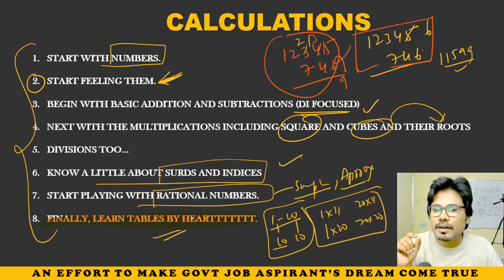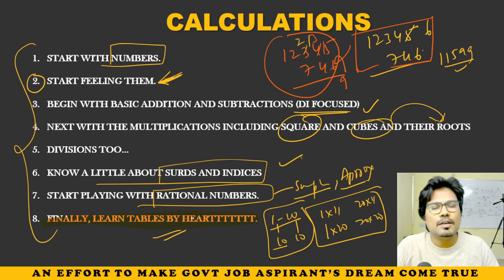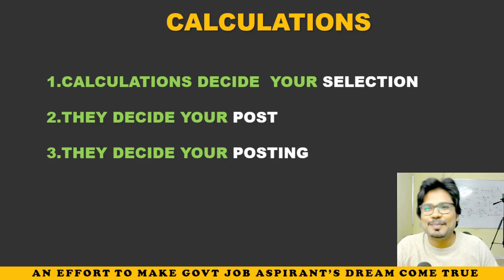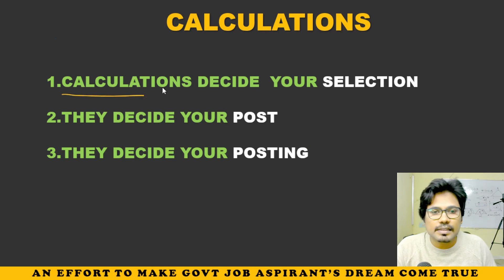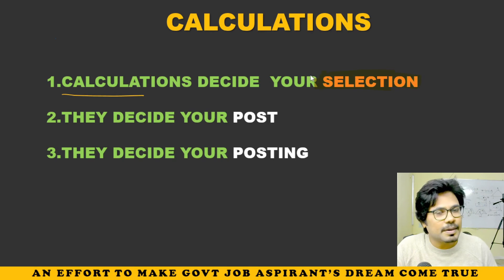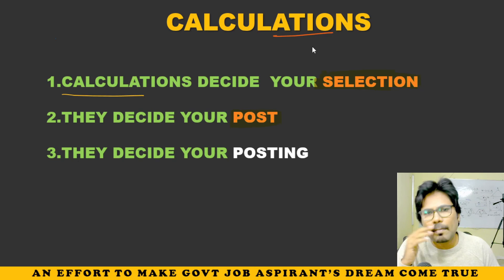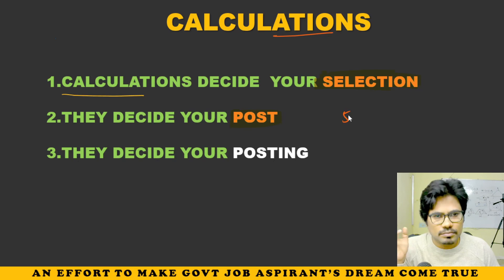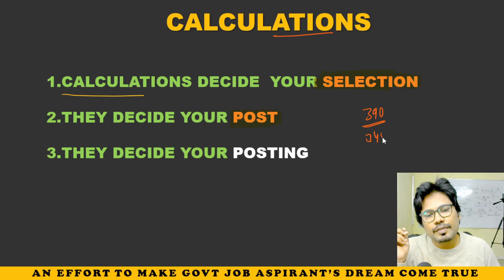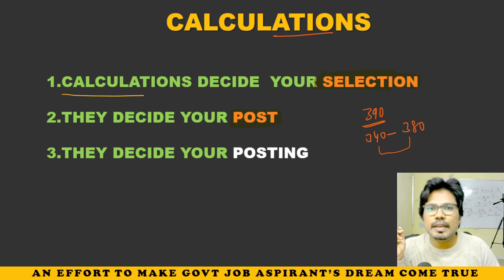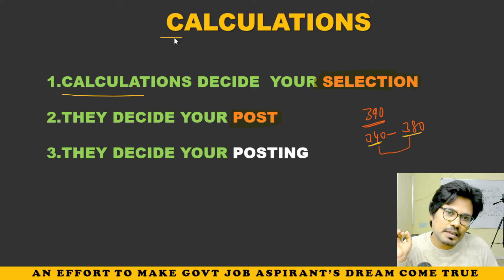Next, let me tell you — if you neglect calculations, that is your blind spot. What are you going to risk? Let me tell you: calculations decide your selection. Right — selection is decided by calculations. And they decide your post too. Whether it is CGL or banking — mark by mark, your post is decided. If the cutoff is around 500, 600, 700 — every mark matters.